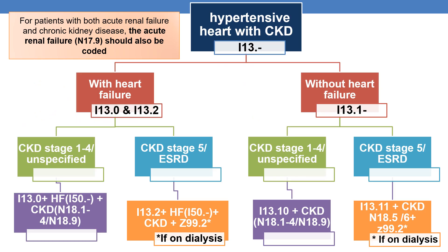Coming to the code for hypertensive heart with CKD: for essential or systemic hypertension alone, the code is I-10. If the patient has heart involvement, the subcategory is I-11. If the patient has both heart and kidney involvement, the category is I-13. I-13 can be broadly categorized into with heart failure and without heart failure. For hypertensive heart with CKD with heart failure, there are mainly two codes: I-13.0 and I-13.2. I-13.0 and I-13.2 are further classified based on the stage of CKD. If the CKD stage is stage 1 to 4 or unspecified, code I-13.0. If the CKD stage is stage 5 or end-stage renal disease, code I-13.2.